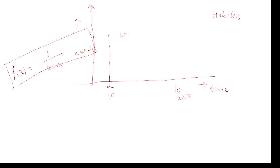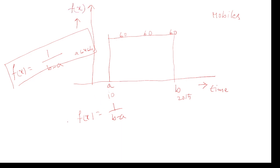Not only mobiles — for any data. For example, if a student got 60 marks in the first semester, 60 marks in the second semester, again 60 marks — the data is uniformly distributed. In that case we use f(x) = 1/(b − a). This is the probability density function for the given random variable.